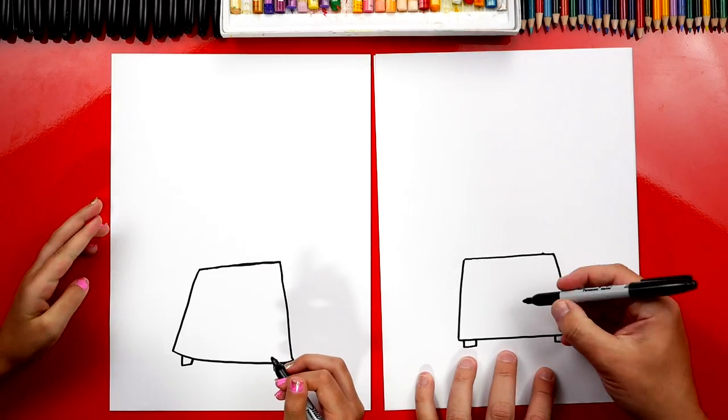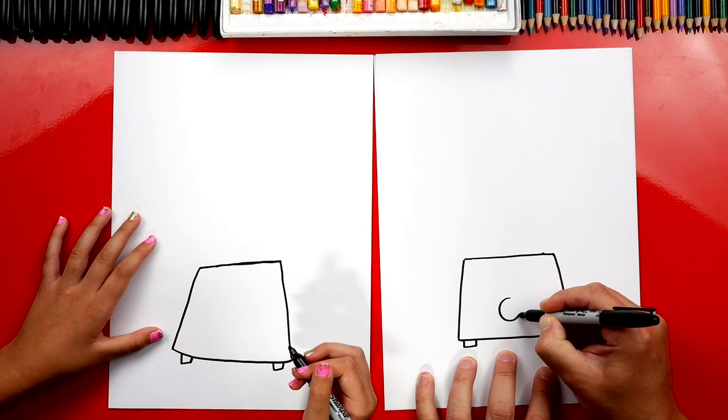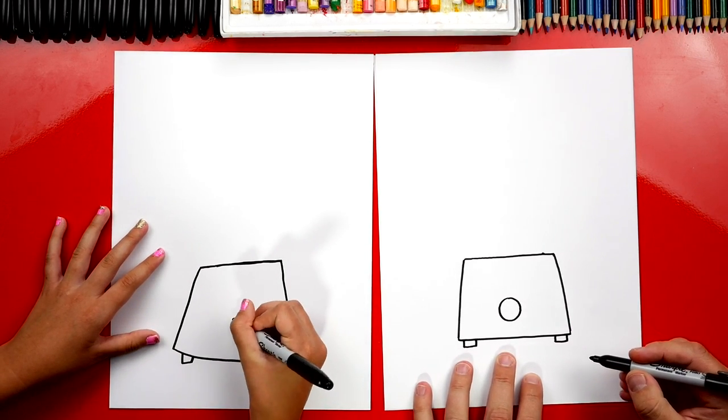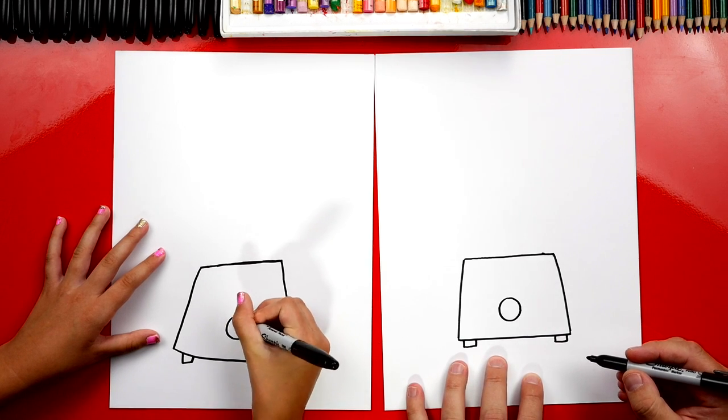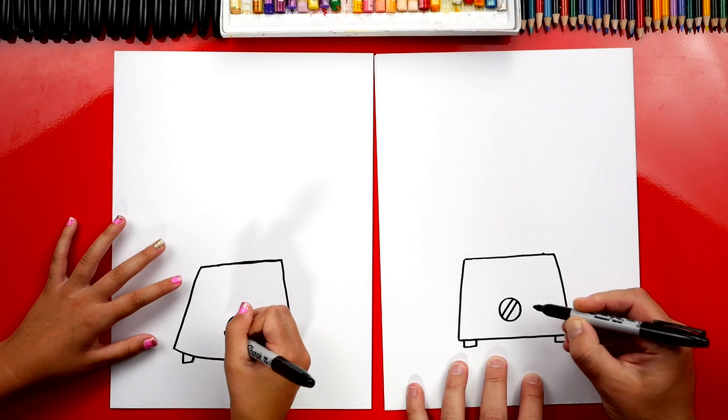Okay now we can draw the dial. Let's draw a circle right here. This is for the speed. And we can also draw... let's draw two diagonal lines in the middle.